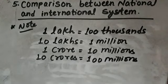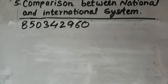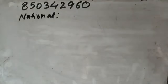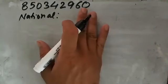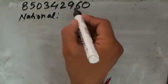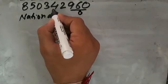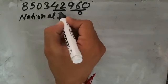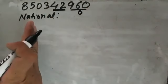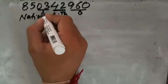Now let's do some questions. Here I have taken a number: 8 5 0 3 4 2 9 6 0. Let's write it in both the national as well as international system. While writing in national system, let's first separate their periods. The first three digits come under ones, then after each two digits come under thousands, lakhs, and crores.